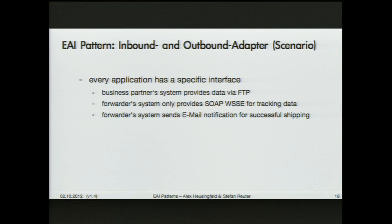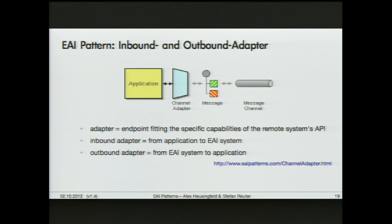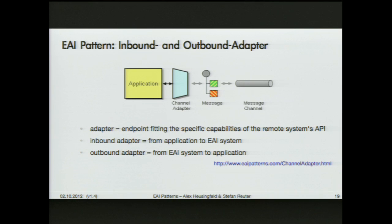Another example is the forwarder system that sends email notifications — this is just an outbound adapter, and there won't even be a corresponding inbound adapter because the emails are for human beings who receive them in their email client. To give you a visual representation, the main purpose of the channel adapter is to adopt the application's interface and create a message which can then be sent through a message channel. To keep things simple, it shouldn't do more than that — it shouldn't adapt the interface and also do a transformation; that's a separate step.